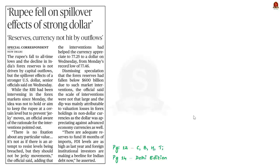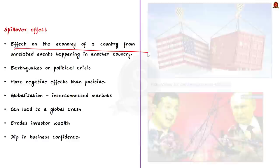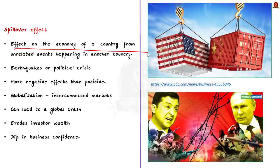Take a look at this news article. It states that the rupee has fallen to all-time lows and there is a decline in India's forex reserves. The reason stated for this decline is the spillover effect of a stronger US dollar. In this context, let us learn about the spillover effect from a prelims perspective. The spillover effect refers to the effect on the economy of a country from unrelated events happening in another country — events such as earthquakes or political crises in another country can have both positive or negative effects on the economy of another country.